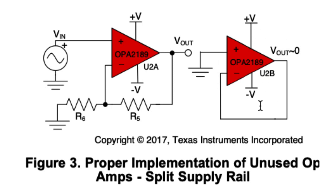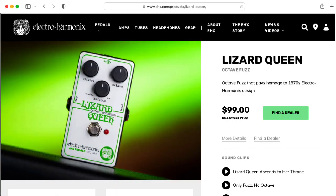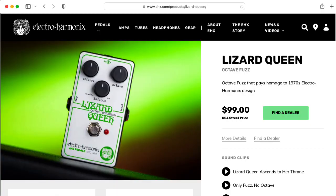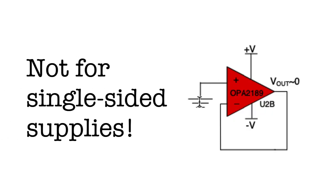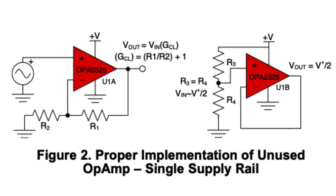If you have a single-sided supply, like the 0 to 5 volts in the tangible waves modular format, or the 0 to 9 volts often used by guitar pedals, then you don't want the input to the follower to be ground. That's going to saturate your amplifier. For the single-supply case, the TI app note says to set the input to the follower to be a voltage halfway between your power rails.